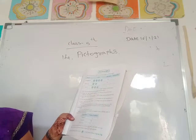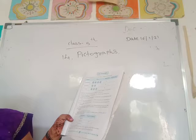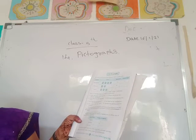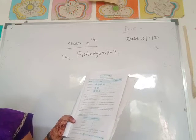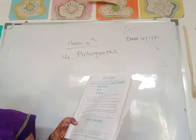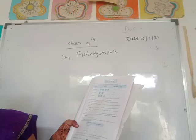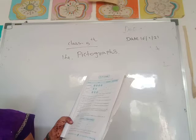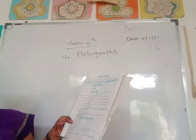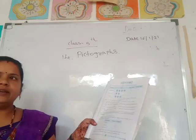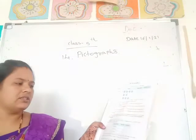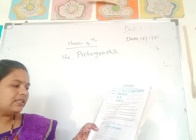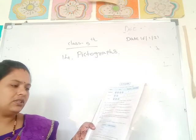During a survey, the number of students living in different types of houses were listed as shown below. The types of houses are: bungalow, apartment, and row house, with the number of students being 4, 20, and 8 respectively. Let's make a pictograph based on this.